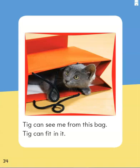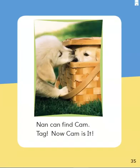Pointing finger under the first word in the sentence. Ready, set. Tig can see me from this bag. Tig can fit in it. What can Tig fit in? Yes, Tig fits inside the bag. Nan can find Cam. Tag. Now Cam is it. What is Cam hiding in? Cam is hiding in a basket. Thank you for reading the story with me, friends. Remember, now that we've read it one time together, you may turn the volume down and go back and read it yourself, sounding out the words and pointing under each word as you read them.